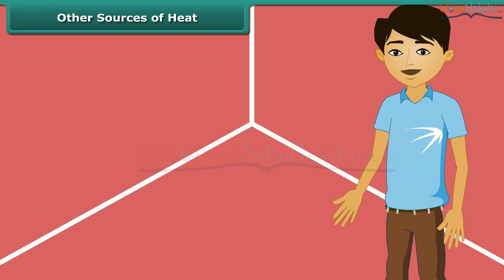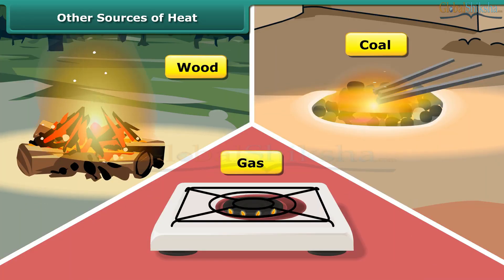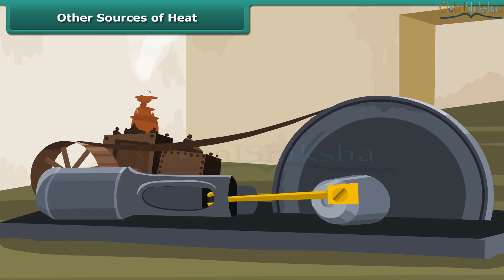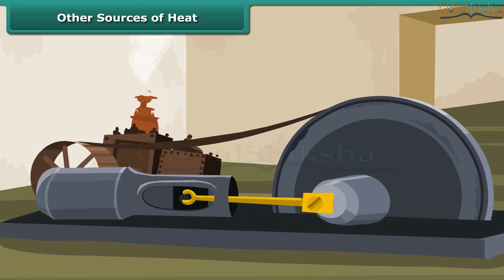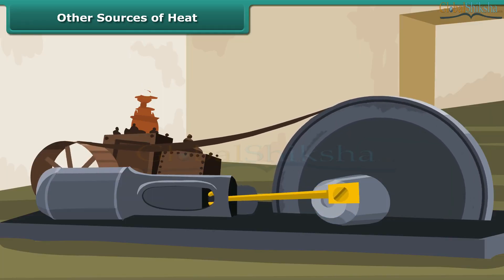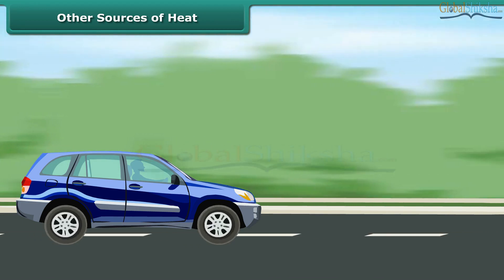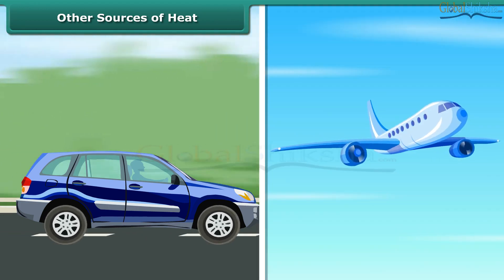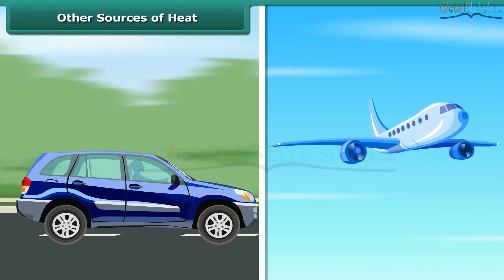Man can generate heat by burning wood, coal and gas. Wood, coal and gas are called fuels. Fuels burn in machines to make them work. A motor car runs by burning fuel; an aeroplane flies by burning fuel.